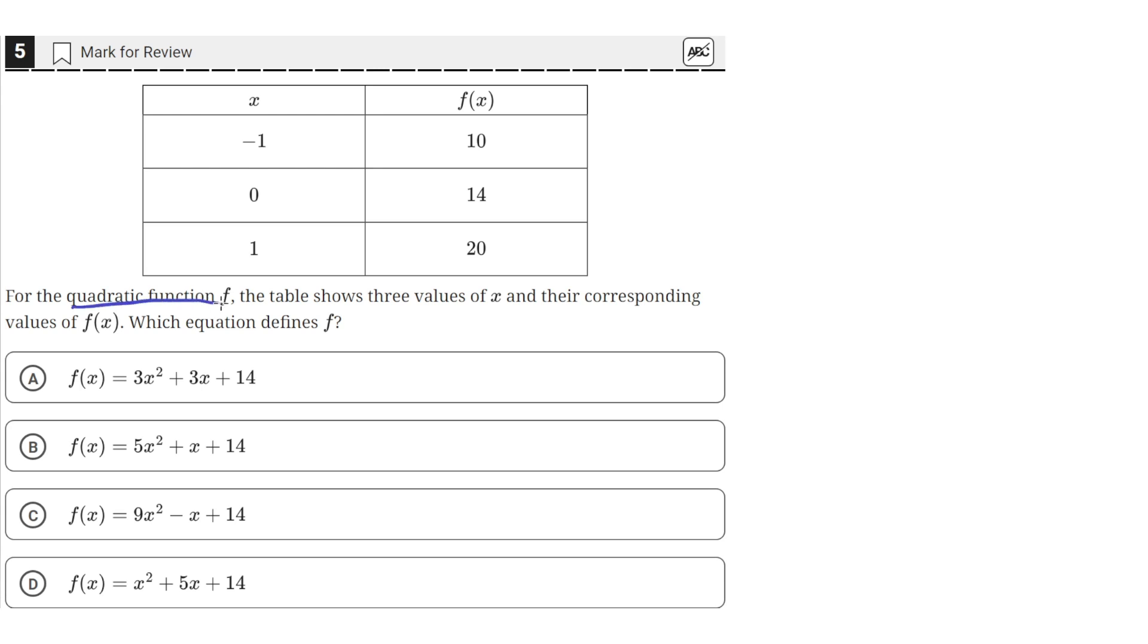For the quadratic function f, the table shows three values of x and the corresponding values of f(x). Which equation defines f? So we're given these three points that define an equation f, and we need to see which one of these answer choices defines f.